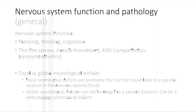When that goes wrong and you get deficits, you can either have focal or global neurological deficits. As the name implies, focal neurological deficits can be traced back to a specific location in the nervous system. We're going to understand each and every part of the nervous system so you'll be able to identify which part was damaged. Global neurological deficits cannot be traced to a specific location — they present as a wide-ranging spectrum of deficits showing damage to many parts of the nervous system. Now we're going to delve into the little details.